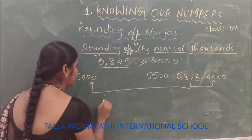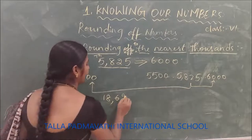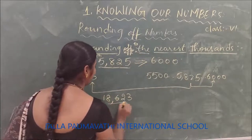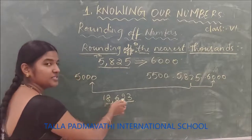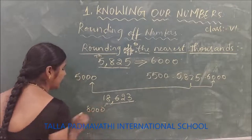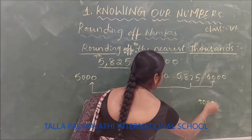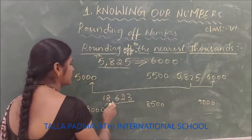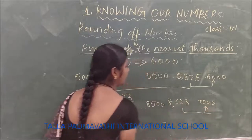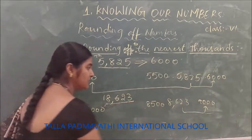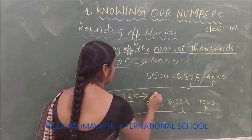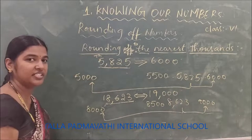Let us take one more number: 18,623. This is also rounding off to the nearest thousands. Now 8,623 is in between 8,000 and 9,000. In between that you will have 8,500. So 8,623 is after 8,500. Is it nearest to 9,000 or 8,000? It is nearest to 9,000. So you can write 18,623 rounded off to the nearest thousand as 19,000.